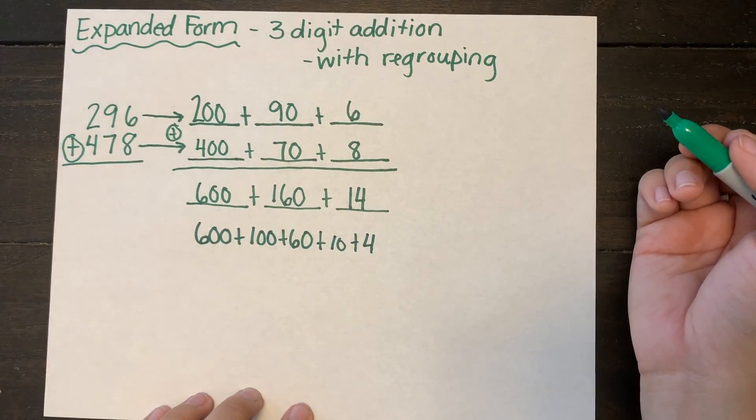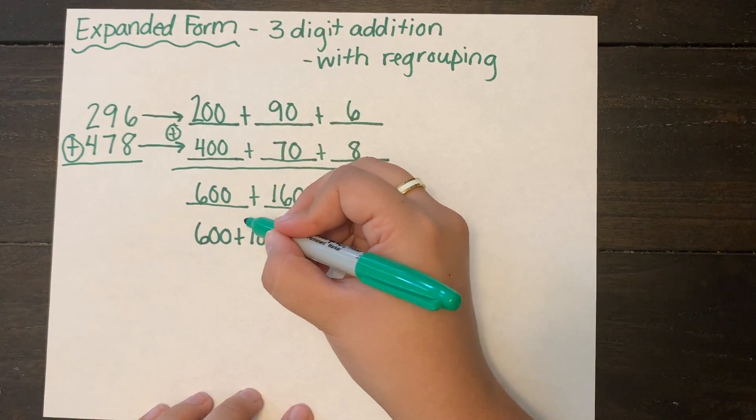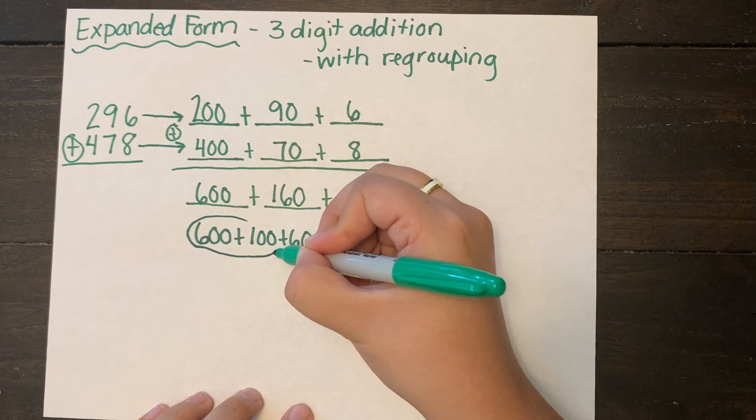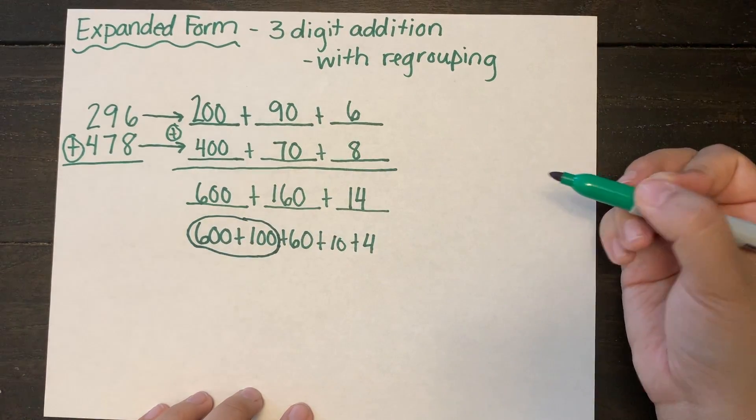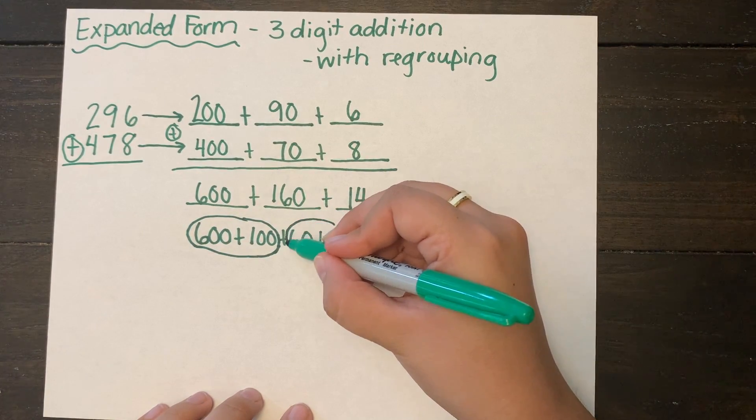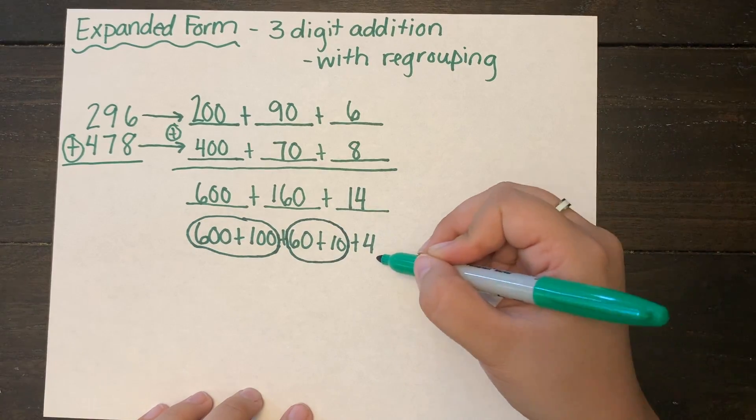Next I'm going to circle my place value. So I'm going to circle 600 plus 100 and 60 plus 10. My hundreds together, my tens together and any ones together.